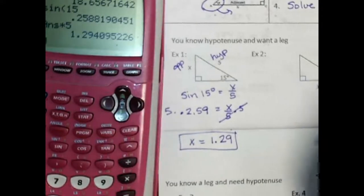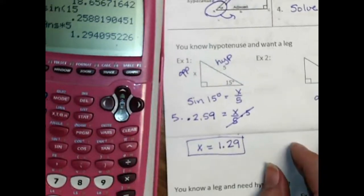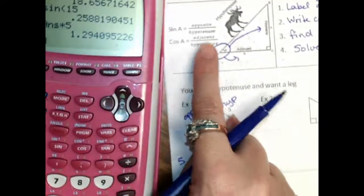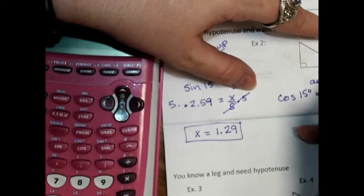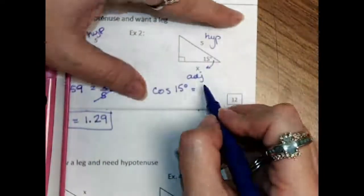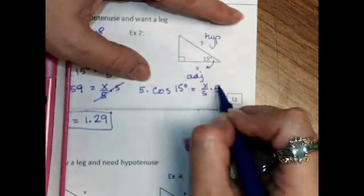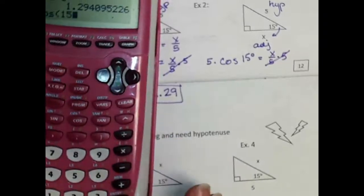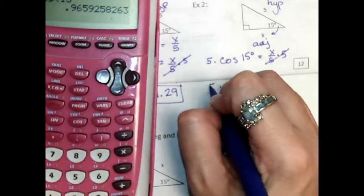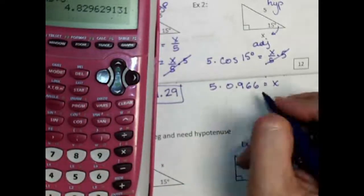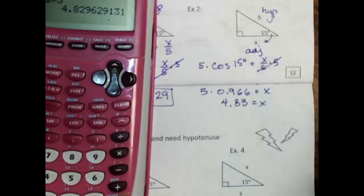Now the next one. Label the parts: the one beside the angle is the adjacent, and this one is the hypotenuse. Adjacent and hypotenuse — that's cosine. Cosine 15 degrees equals adjacent over hypotenuse — that's X over 5. When the number is on the bottom, multiply both sides by it. Cosine 15 is 0.966, times 5 gives 4.83. Check: is 4.83 smaller than the hypotenuse of 5? It is, so that's good.